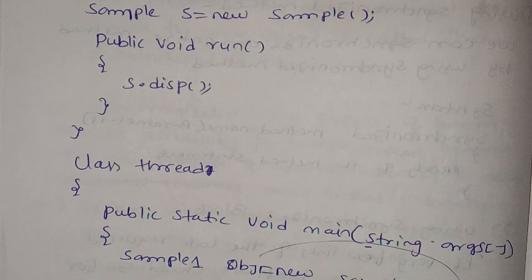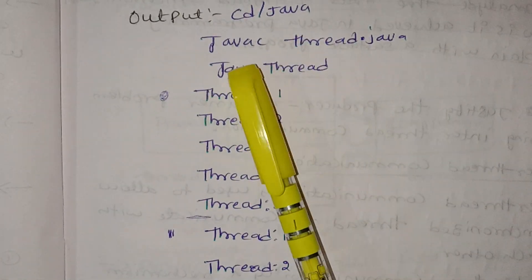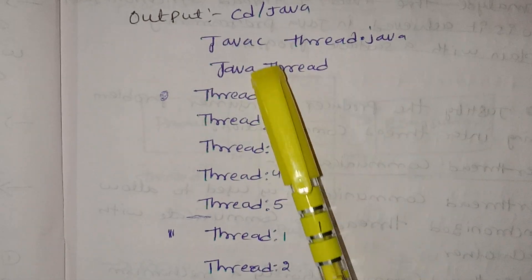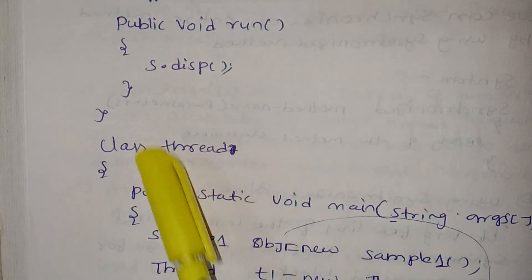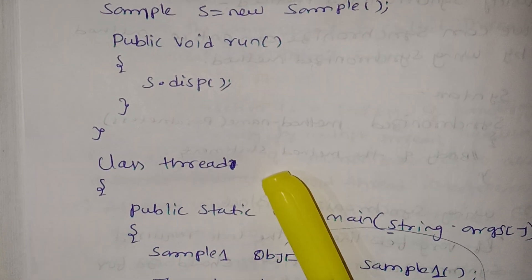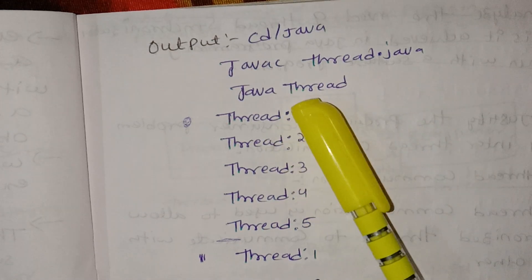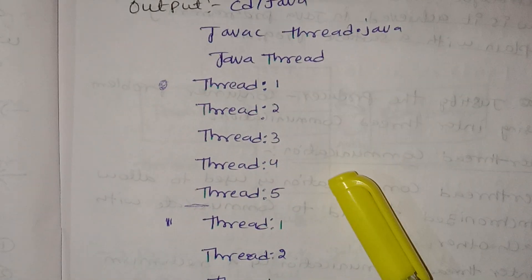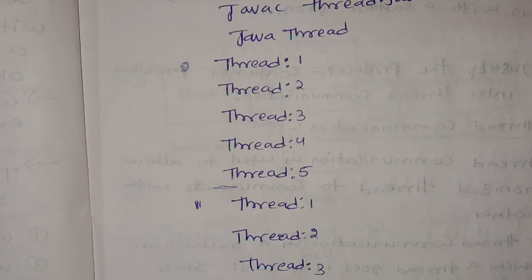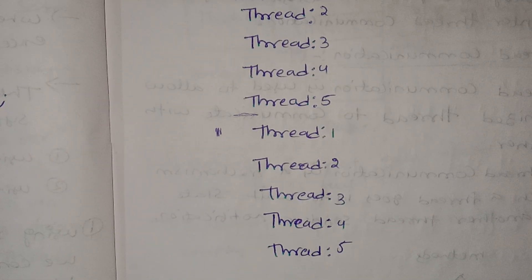Now we will open the command prompt. cd for Java. Compile and run the Java thread program. Execute — the output shows thread 1 completing its execution followed by thread 2, confirming synchronized behavior.